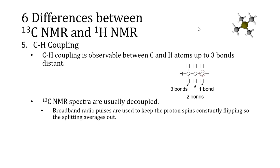Another difference between carbon and hydrogen NMR is the presence of carbon-hydrogen coupling. Hydrogen is NMR active and has different spin states, so carbon spectra are split by the hydrogen atoms attached to those carbon atoms. The reason we don't see carbon-hydrogen splitting in hydrogen NMR spectra has to do with the rarity of carbon-13. If only 1% of all hydrogen peaks have carbon-13s in them, you're not going to see carbon-hydrogen splitting. But in carbon NMR, where every carbon-13 is being detected and most have hydrogens on them, you can see carbon-hydrogen splitting.